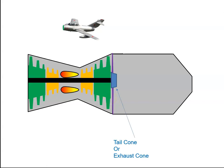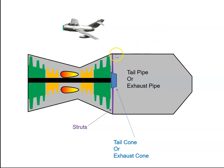The various components of the exhaust section are: the tail cone, sometimes known as the exhaust cone; the struts; and the tail pipe or exhaust pipe. This is basically the section that transfers the exhaust gases to the nozzle — in this example from around here up to around here. And then we have the nozzle itself.